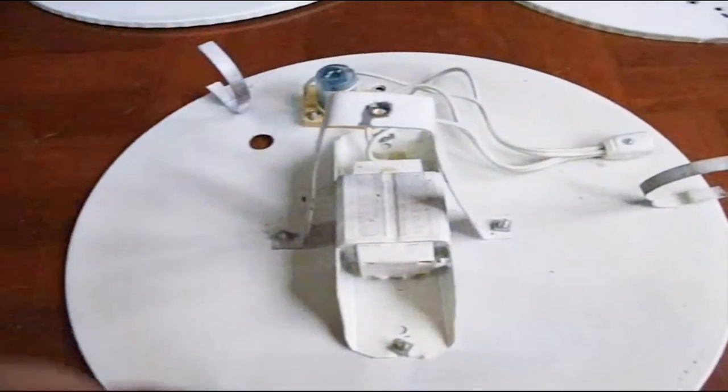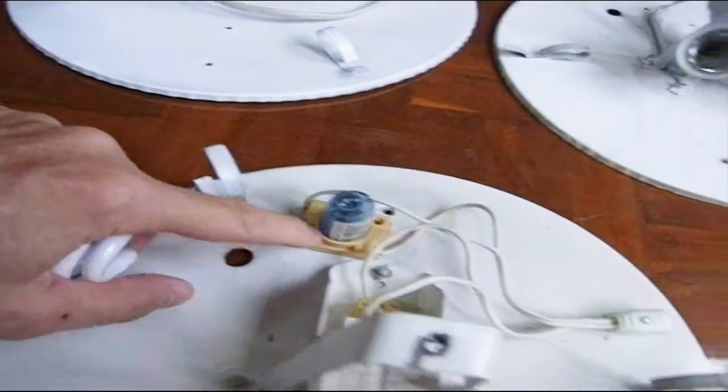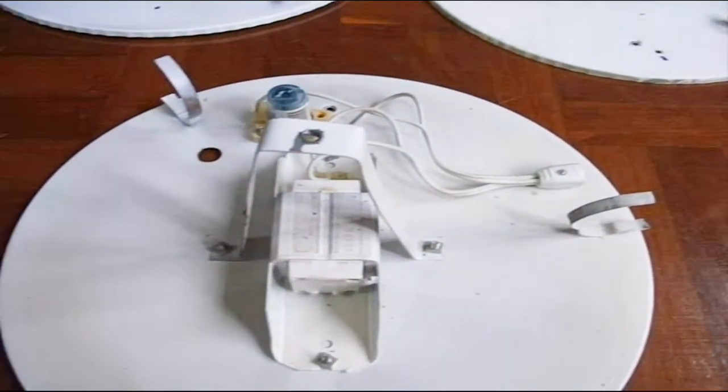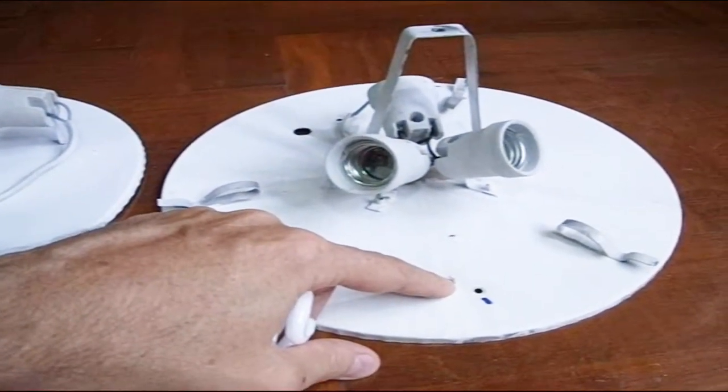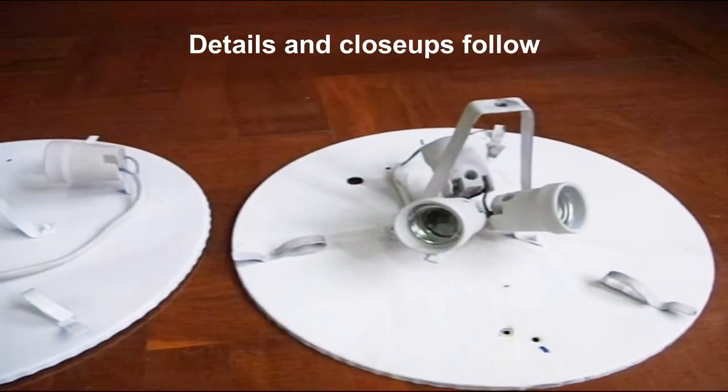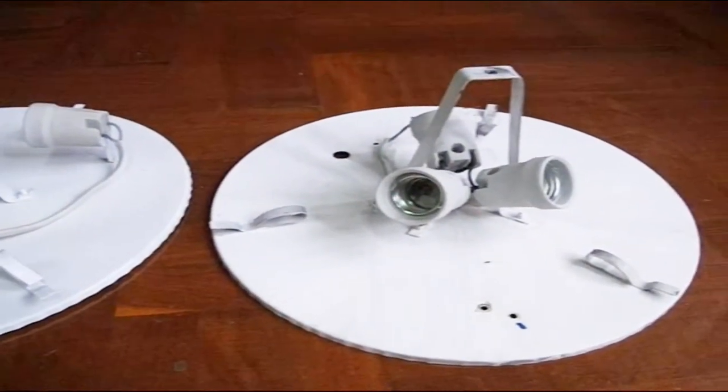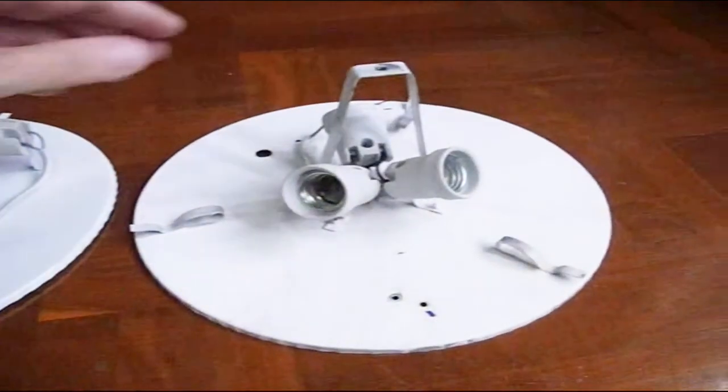In the conversion, you can see all these screws that held in the ballast and starter. When you take all that off and throw it away, you have these holes. I recommend closing the holes with pop rivets. You may have to drill a hole out a little bit and put in a bigger pop rivet. It helps keep bugs and dust out.